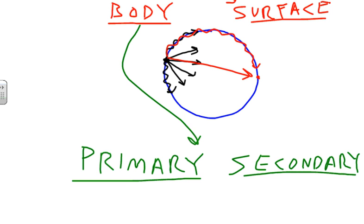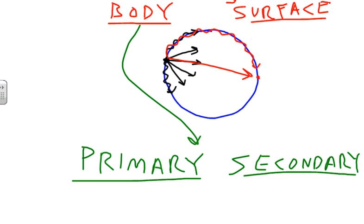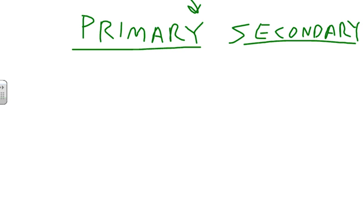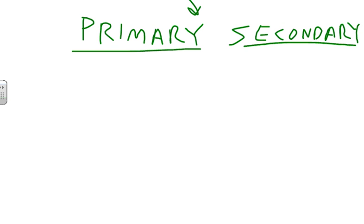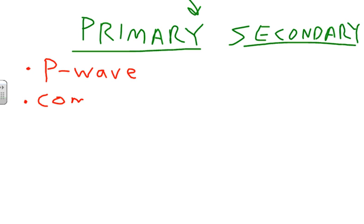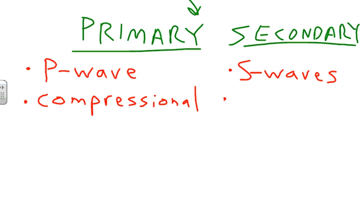The main difference is how they move. P waves and S waves move differently. Primary waves travel by the material pushing against each other — they're compressional waves. The secondary waves, the S waves, are shear or transverse waves.